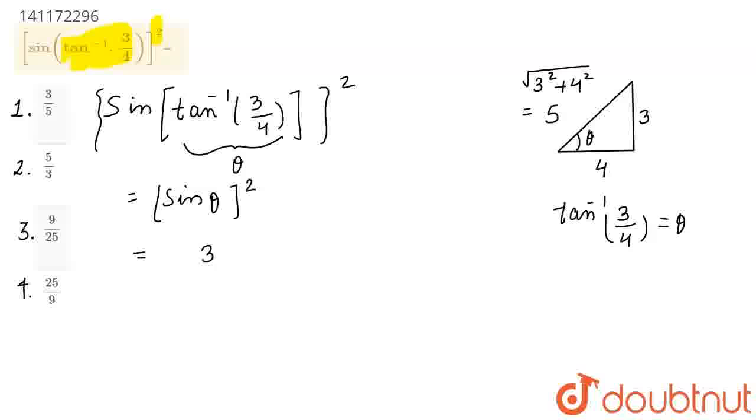So, that will be 3 upon 5 and this whole is squared. So, this is going to give me 9 upon 25. This is our final answer.